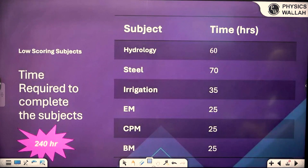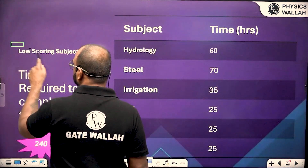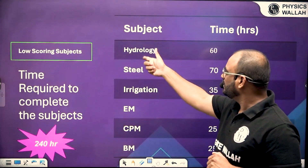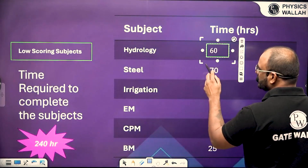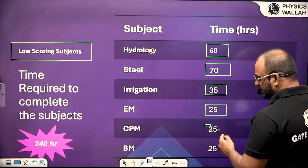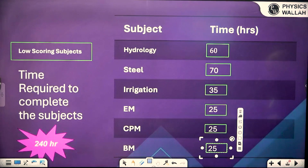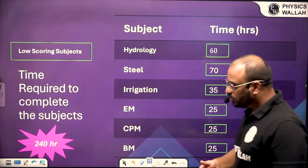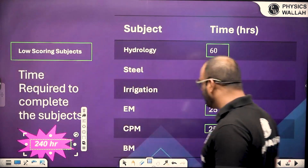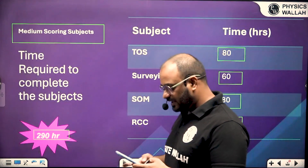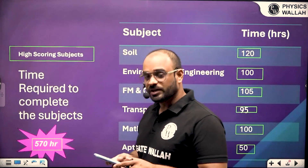For low scoring subjects: hydrology requires 60 hours, steel structure 70 hours, irrigation 35 hours, engineering mechanics 25 hours, CPM 25 hours, and building material 25 hours — approximately 240 hours in total. Adding all categories: 570 plus 290 plus 240 gives approximately 1100 hours total to cover the entire civil engineering syllabus.